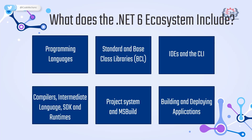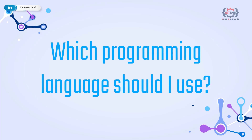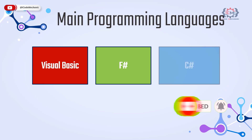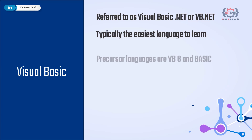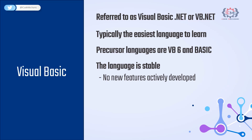One of the first decisions you must make when developing an application is which programming language to use. .NET supports a variety of programming languages — some created by Microsoft, some not. The main languages for .NET development are Visual Basic, F# and C#. Visual Basic, also known as VB.NET, is usually the simplest language to learn. It originated from Basic, developed in the 1960s. Although the language is stable, no new features are actively being developed, but there are still many applications written in Visual Basic.